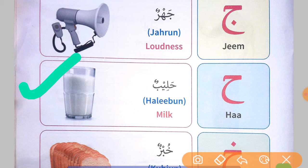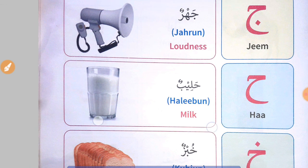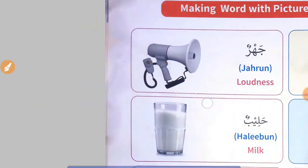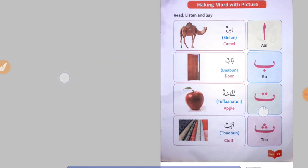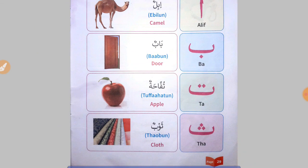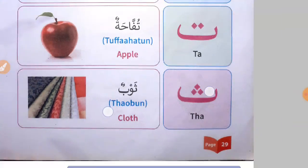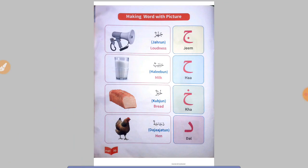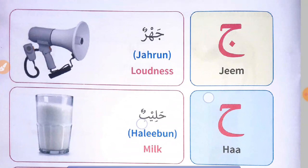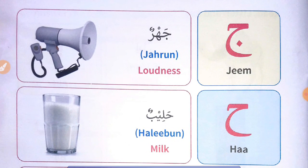Now, dear students, say with me. Jim for Jahroon. Sa. Sa for Saubun. Next one — Jim. Jim for Jahroon. Ha. Ha for Halibun.